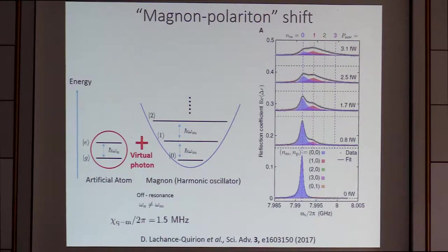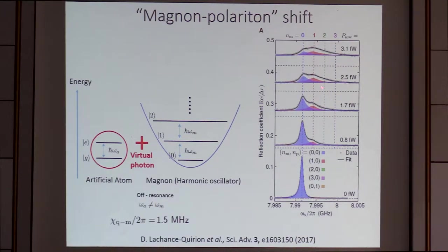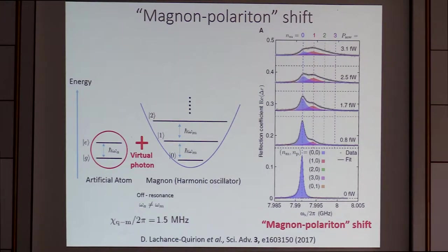The important point is that the qubit frequency depends on the magnon number, so we can use this as a magnon counter. This is the spectroscopy result: the lower graph shows no magnon excitation — just vacuum — giving one frequency. But if we drive the magnon a little, the qubit starts to broaden, and that broadening is discretized. We can map out how many magnons are actually excited. This is in a way like a light shift, but if chi is large enough the shift becomes discretized and we can count the number of magnons. This is one example of quantum magnonics.